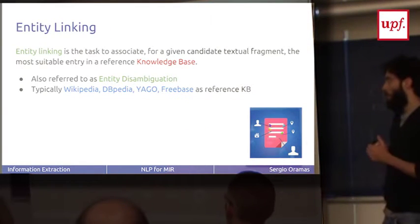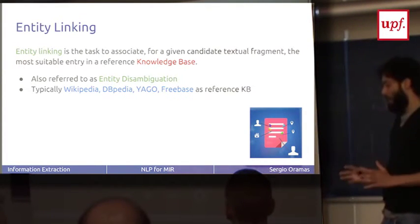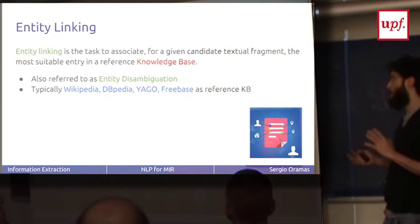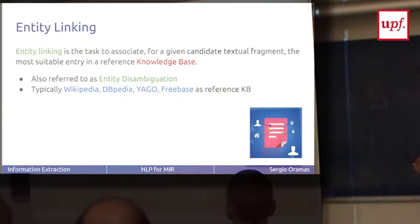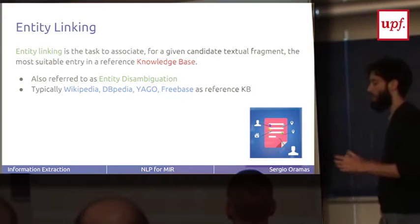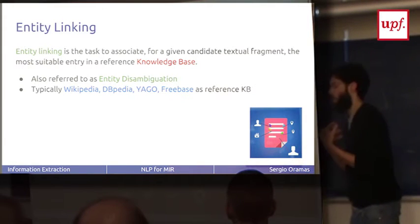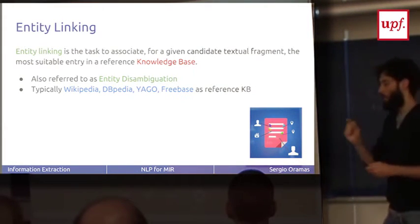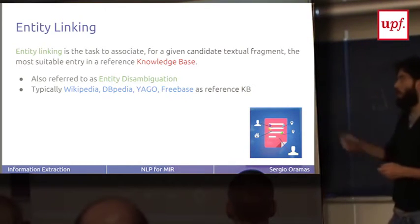Entity linking, as I said, is the task to associate a candidate text to an entry in a knowledge base. Typically, entity linking systems work with Wikipedia, DBpedia, or in the end with Freebase. There are systems that you give a text and it returns you the annotation in the text and the entries in this knowledge base.